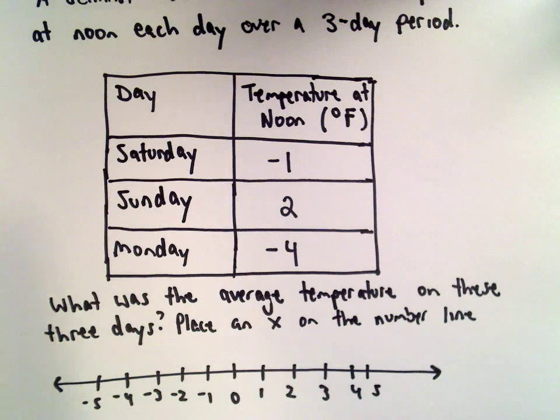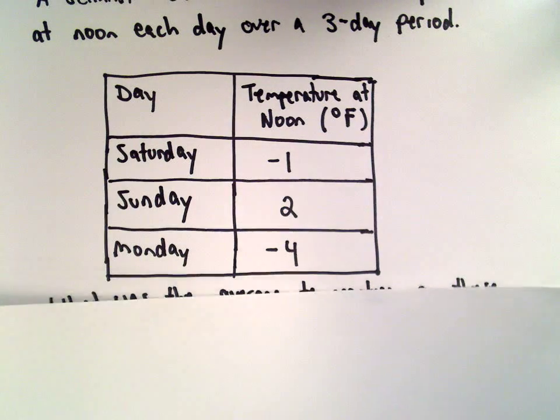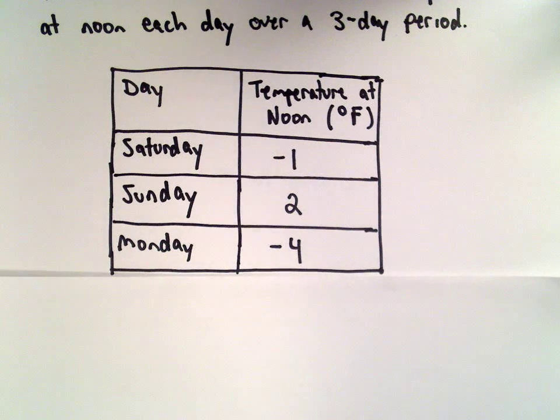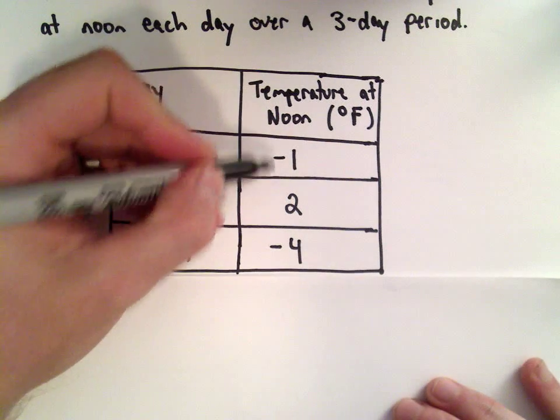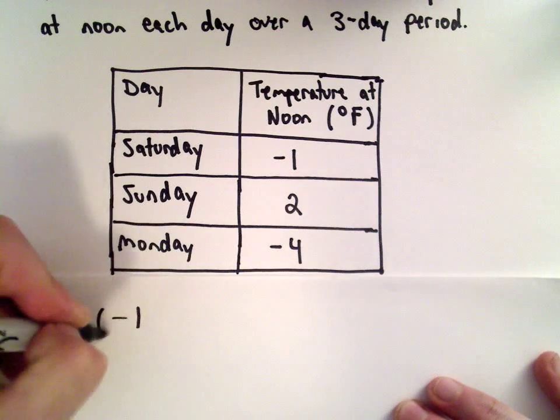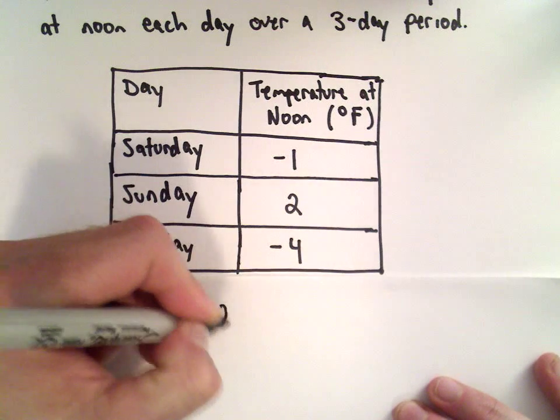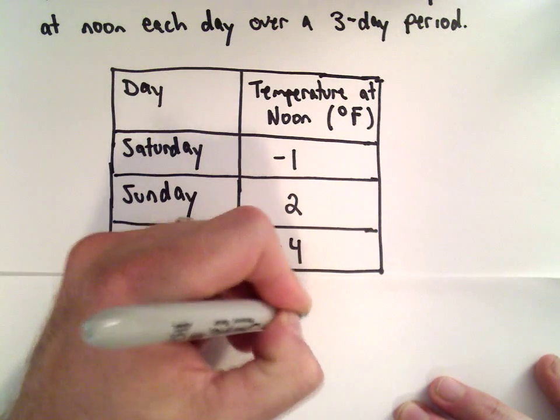So in this case, all we're doing is just finding the average. And we saw one of the problems involving averages, the one about golf scores. To find the average, we simply add up the values. So we have negative one plus two plus negative four.